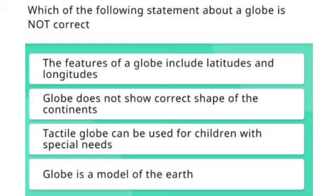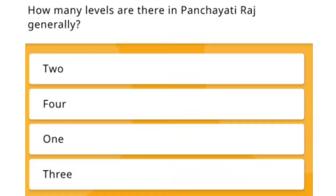The next question: which of the following statements about a globe is not correct? Option 1: The features of a globe include latitudes and longitudes. Option 2: Globe does not show the correct shape of the continents. Option 3: Tactile globe can be used for children with special needs. Option 4: Globe is a model of Earth. The right answer is Option 2.